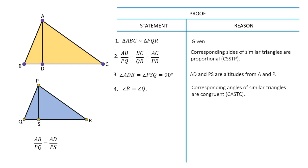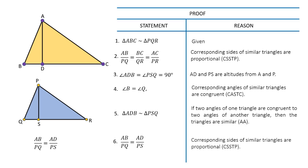It follows from statements 3 and 4 that triangle ADB is similar to triangle PSQ by angle-angle similarity. This implies AB over PQ is equal to AD over PS. Hence proved.